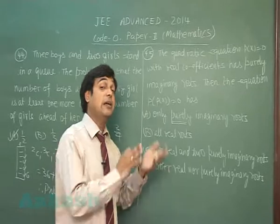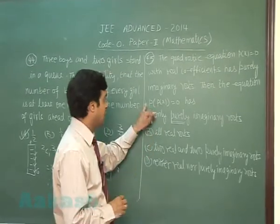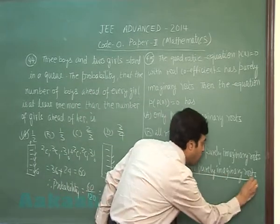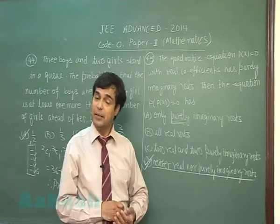So it can have mixed numbers as well, like a plus iota b. So the solution set for it: neither real nor purely imaginary number, it can be a mixed complex number. Correct? Let's go for the next one.